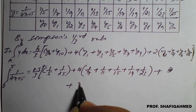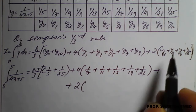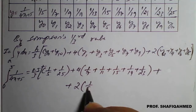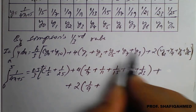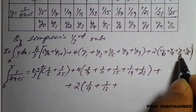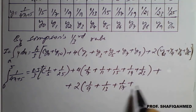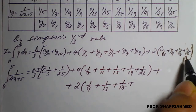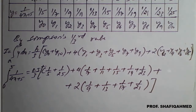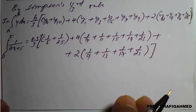Plus 2 times: y2 value is 1 upon 9, plus y4 value is 1 upon 13, plus y6 value is 1 upon 17, plus y8 value is 1 upon 21. Close the bracket. This value we will apply in the calculator and see what is the final result.